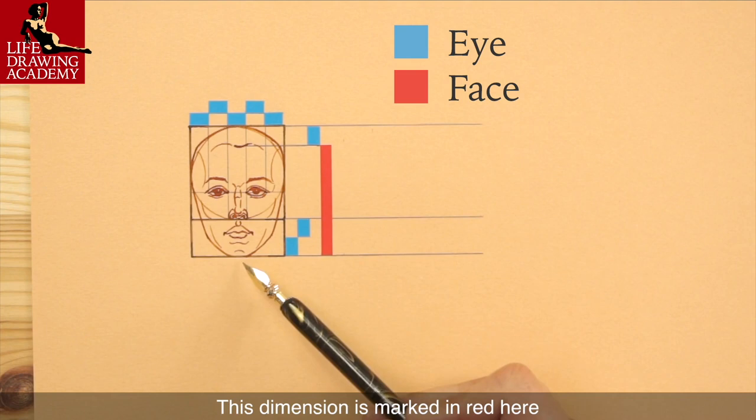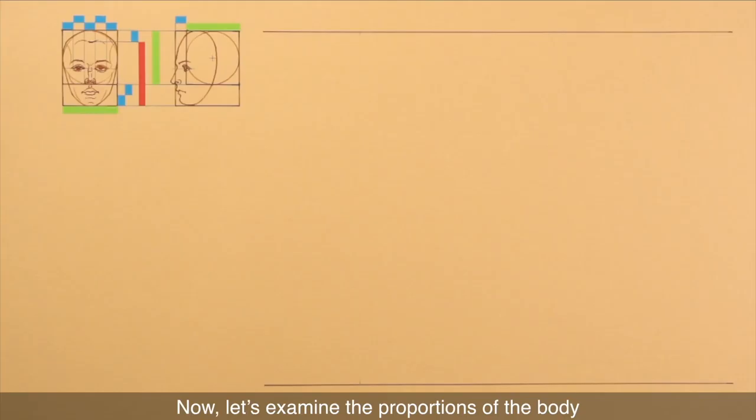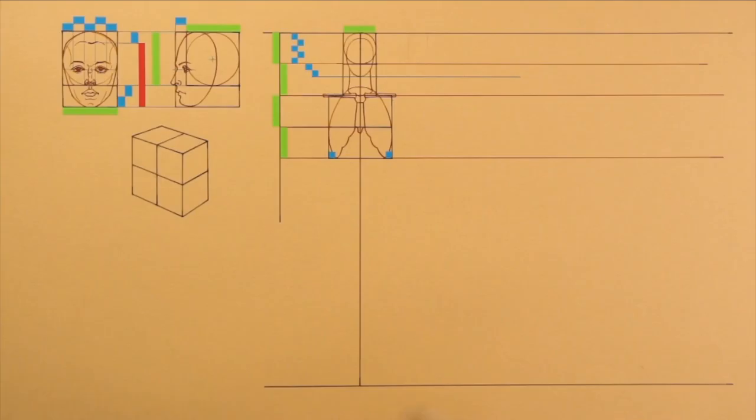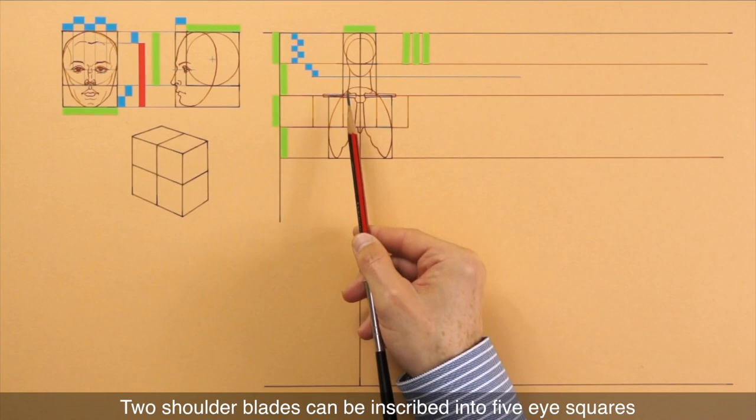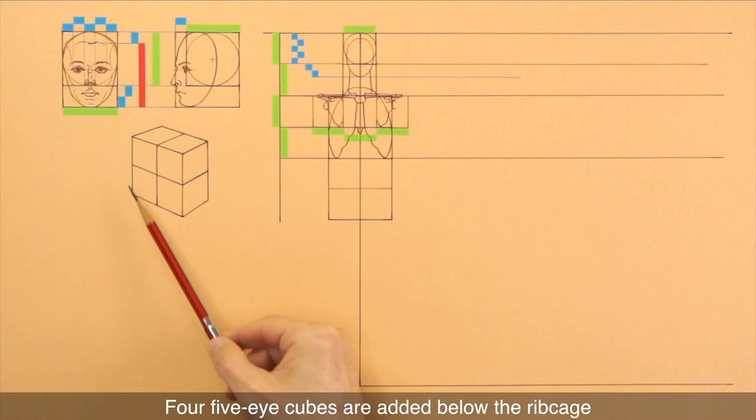Now, let's examine the proportions of the body. Two shoulder blades can be inscribed into five eye squares. Four five eye cubes are added below the ribcage. The width of the bottom part of the pelvis is five eyes.